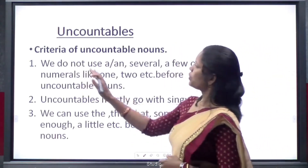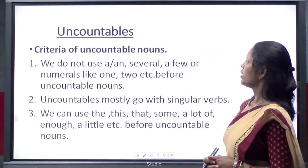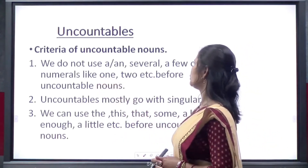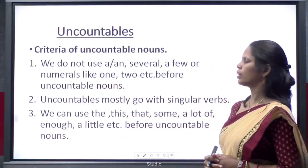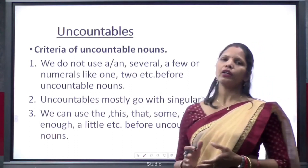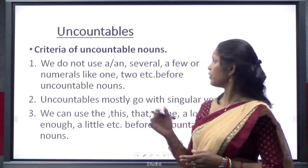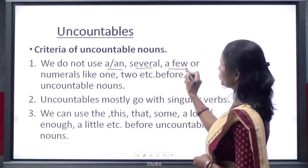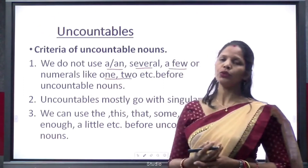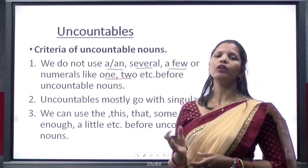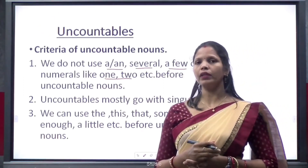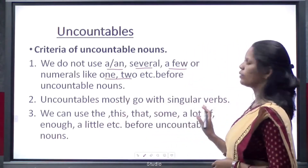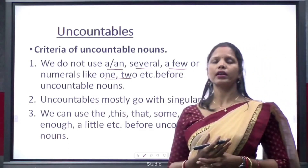The first criterion is we do not use 'a' or 'an', 'several', or numerals like one, two, etc. before an uncountable noun. The second criterion is uncountable nouns always go with a singular verb form.